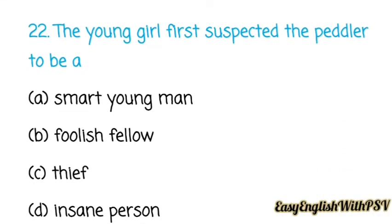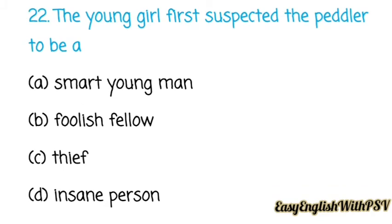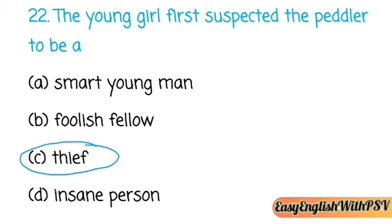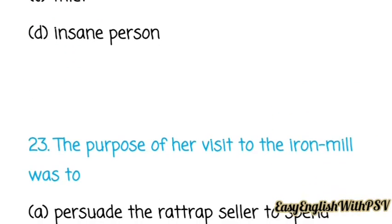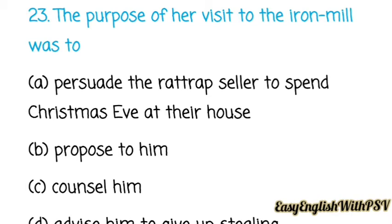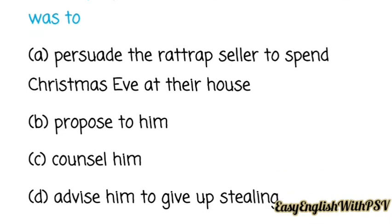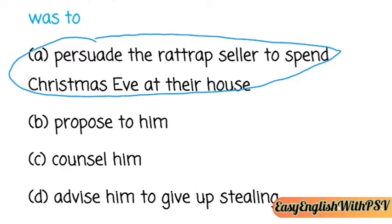Question number twenty-two: The young girl first suspected the peddler to be — a smart young man, a foolish fellow, a thief, or an insane person? She suspected him as a thief, whether he had stolen something or escaped from jail. Question number twenty-three: The purpose of her visit to the iron mill was to persuade the rat trap seller to spend Christmas Eve at their house.